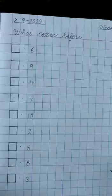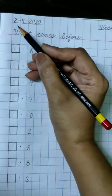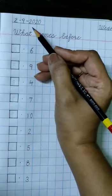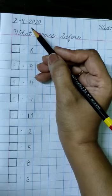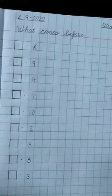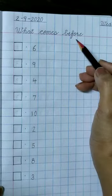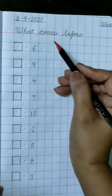Now we will do work in our maths copy number 1. So first of all write the date here and today's date is 2-9-2020, 2nd September and the day is Wednesday. Then write what comes before on the top. Then leave above boxes.